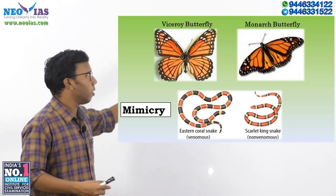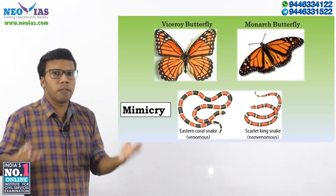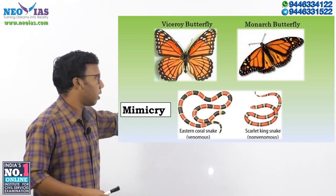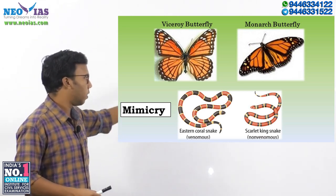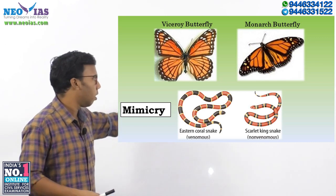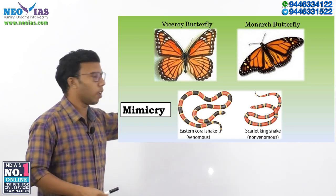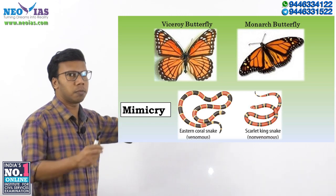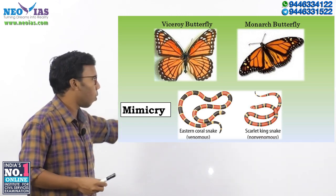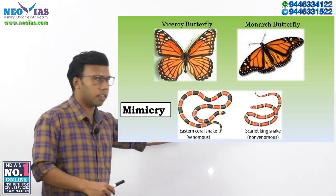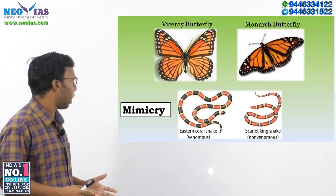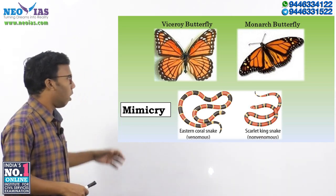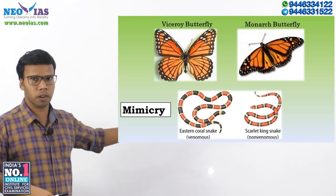In the same way, consider two snakes: the eastern coral snake and the scarlet king snake. The eastern coral snake is venomous, but the scarlet king snake is not. However, the scarlet king snake has the same appearance as the eastern coral snake, and thereby the scarlet king snake benefits. Ultimately, mimicry is when a harmless creature makes itself look like a dangerous one.